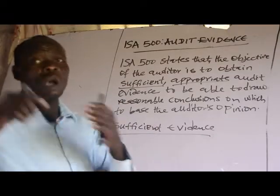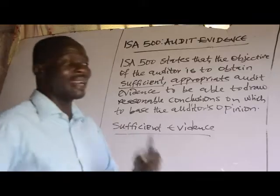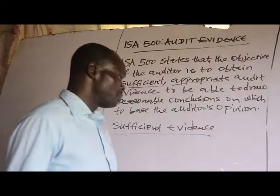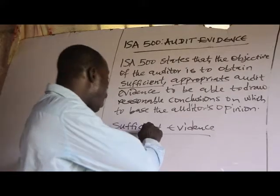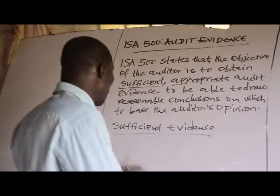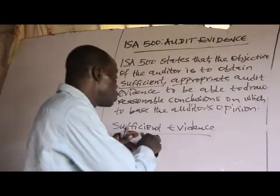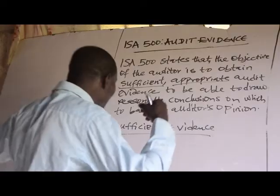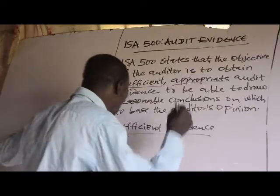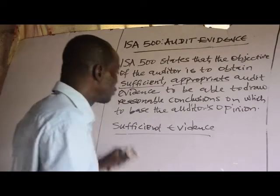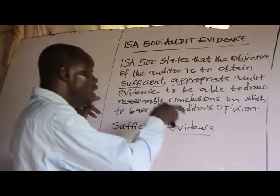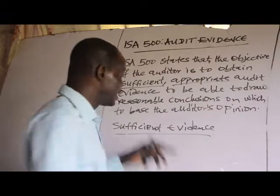Where the risk of material misstatement is very high, greater audit evidence will be required. If the risk of material misstatement is very high, the auditor will be required to gather a greater, sufficient amount of audit evidence. Sufficient Audit Evidence refers to the quantity of the evidence gathered.